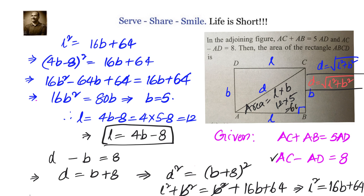So, if in a rectangle AC plus AB equals 5 AD and AC minus AD equals 8, then the area of the rectangle is 12 times 5, which is 60 square units.